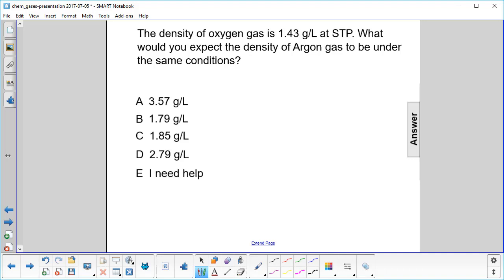The density of oxygen gas is 1.3 grams per liter at STP. What would you expect the density of argon gas to be under the same conditions?